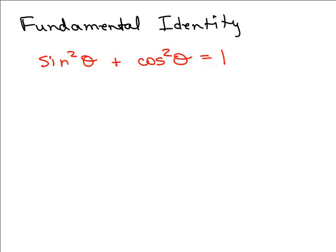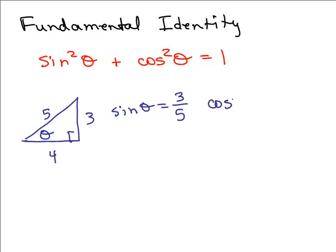Let's do a quick example to prove the point. Let's say I have this common 3, 4, 5 triangle and we'll call this theta right here. So what is the sine of theta in this picture? It would be opposite over hypotenuse or 3 fifths. And the cosine of theta would be the adjacent over hypotenuse or 4 fifths.